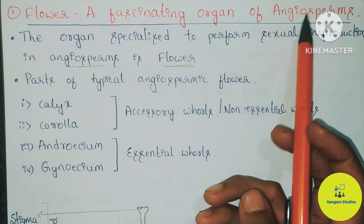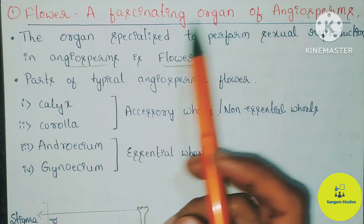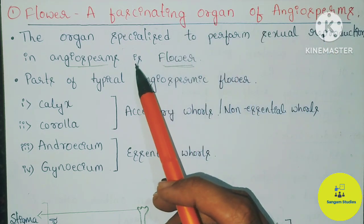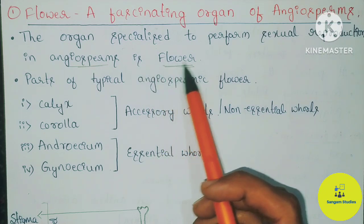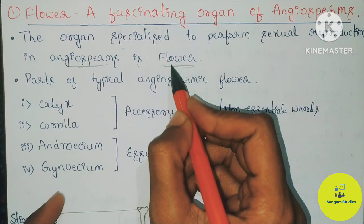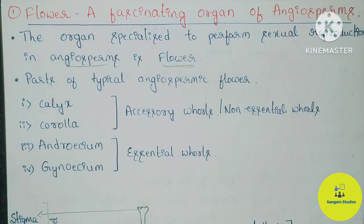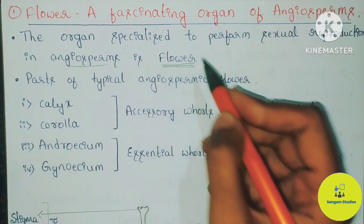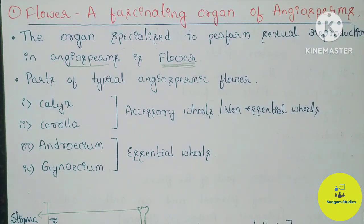First topic is Flower, a fascinating organ of Angiosperms. The organ specialized to perform sexual reproduction in Angiosperms is the Flower. Angiosperms have a specialized organ for sexual reproduction called the Flower. You need to concentrate on all the lessons, as the Flower will be central to understanding sexual reproduction.